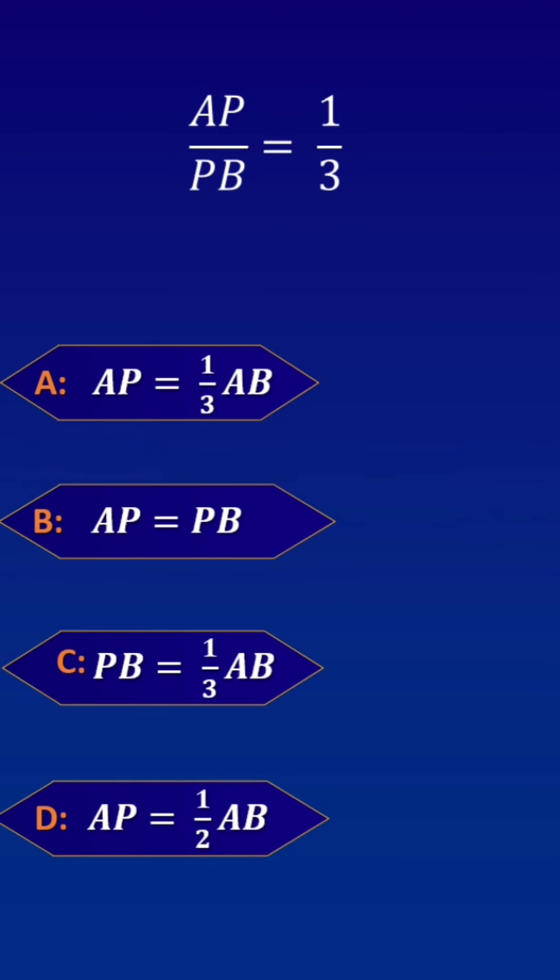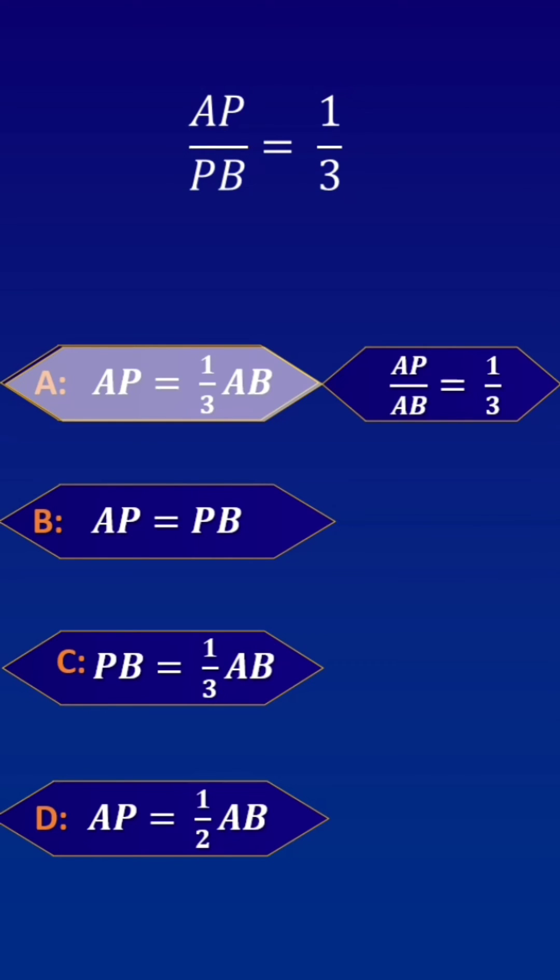So, AP by PB is equal to 1 by 3. Let us scan the options one by one. According to option A, AP by AB is equal to 1 by 3. So, it is wrong.